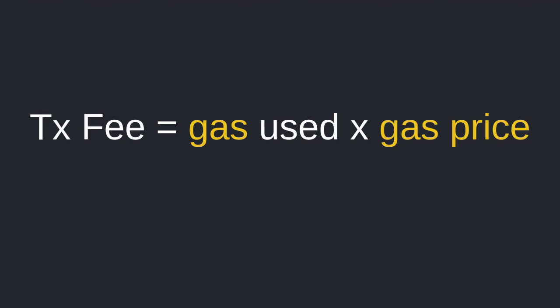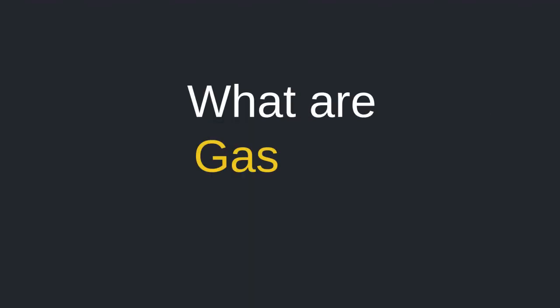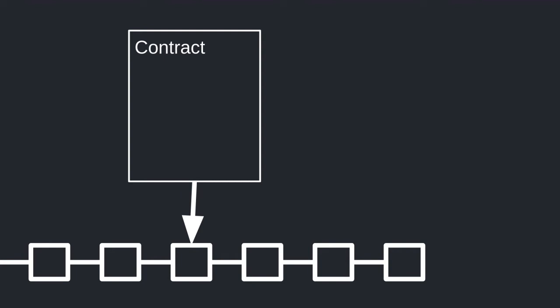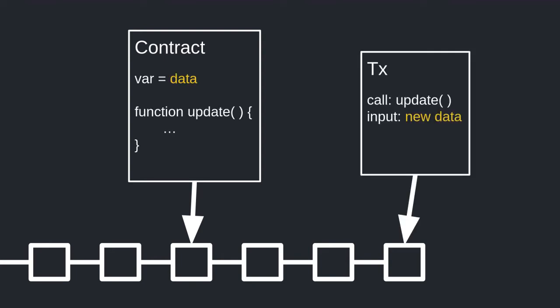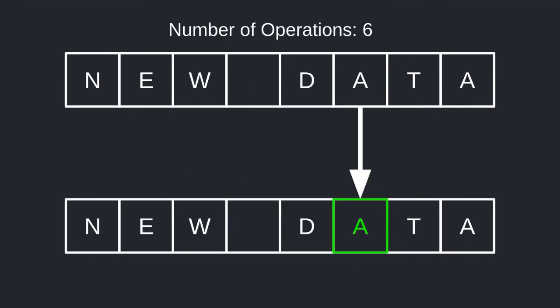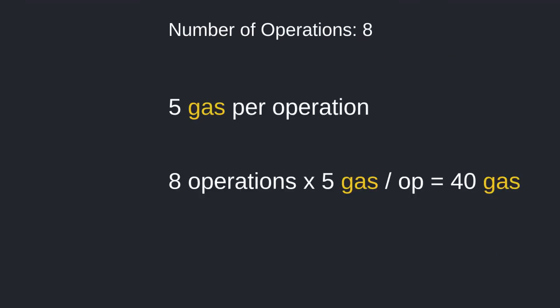Welcome back. In the previous video I mentioned that transaction fee equals gas used times gas price — but what are gas and gas price? Let's go over them in this video. Imagine I have a smart contract deployed on the blockchain. Inside the contract, a variable stores some data. I send a transaction to update the variable. For this transaction to be processed, there are a number of operations that must be done, such as copying each byte from the input into the variable stored in the smart contract.